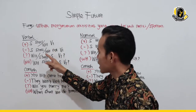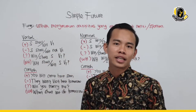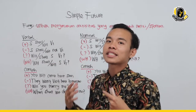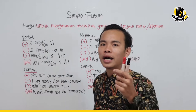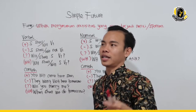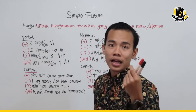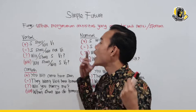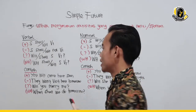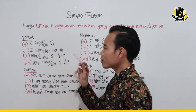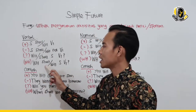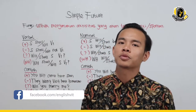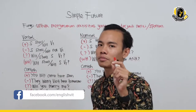Formulanya: Subject + shall/will + not + kata kerja bentuk pertama. Untuk interogatif, caranya sama kayak tensis sebelumnya — letakkan auxiliary-nya di depan: will atau shall diikuti subject, lalu kata kerja bentuk pertama. WH question-nya: WH-nya di depan, shall atau will setelahnya, lalu subject, diikuti kata kerja bentuk pertama.